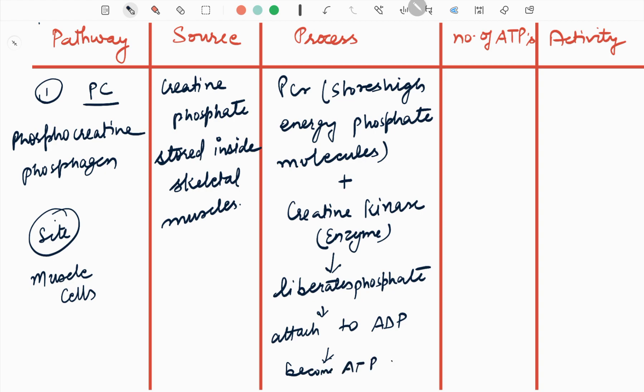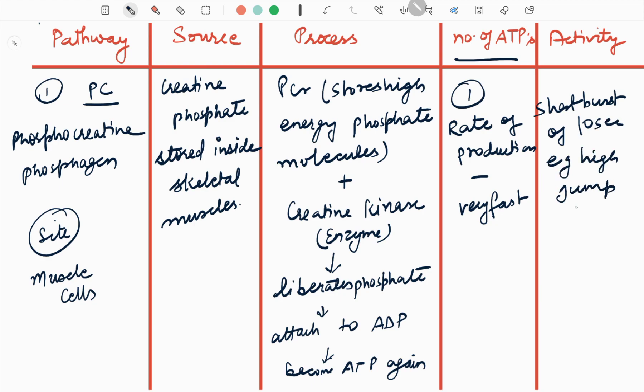So this is the short process. Number of ATPs produced here is one. Rate of production is very fast. Activities are short bursts of 100 seconds. Examples: high jump, 100 meter dash, knockout, sprinting, etc.